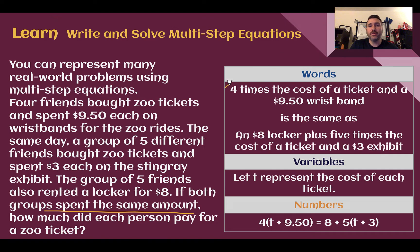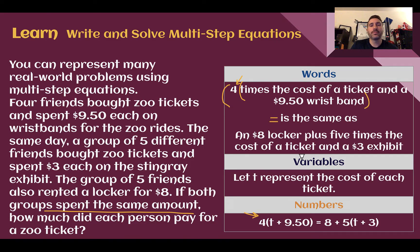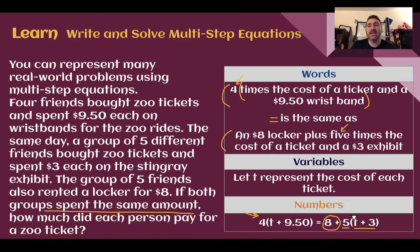Setting this up: the first group had four friends, so that's four times the cost of a ticket plus the $9.50 wristband. That's how we write it using the distributive property — four groups of the same thing. That equals our second group: an $8 locker rented once, plus five times the cost of a ticket and $3 for the stingrays. There were five friends, so they had to buy five tickets and five stingray passes, plus the $8 for the locker. Then to solve for the price of a ticket, we distribute, combine like terms, and figure out what t equals.